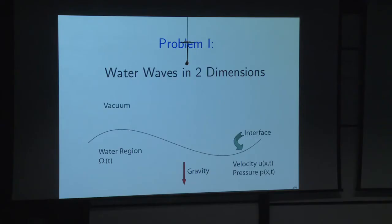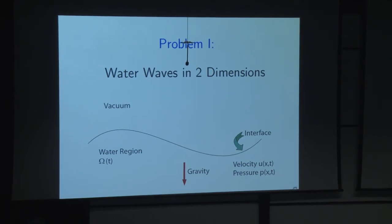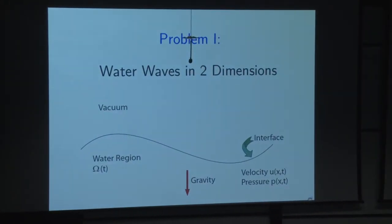Let's talk about water waves in two dimensions. On the slide there's a curved line — that's the surface of the water, since we're in two dimensions. Above the interface is a vacuum or air; below is water. At time t, the water region is called omega of t. The water's velocity is u of x,t — a vector in R2 — and there is a pressure p of x,t, a scalar. Let's say gravity is also acting.